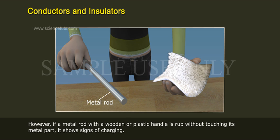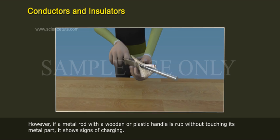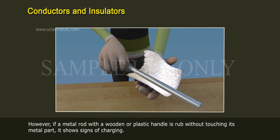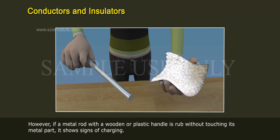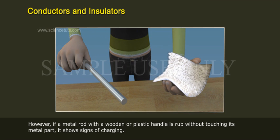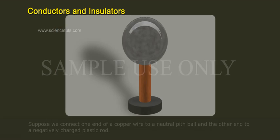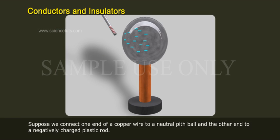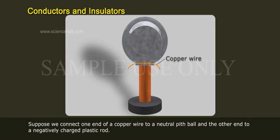However, if a metal rod with a wooden or plastic handle is rubbed without touching its metal part, it shows signs of charging. Suppose we connect one end of a copper wire to a neutral pith ball and the other end to a negatively charged plastic rod.